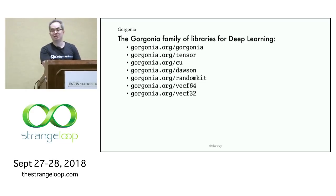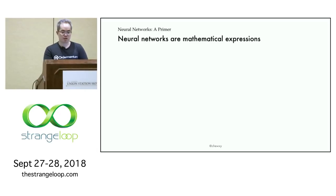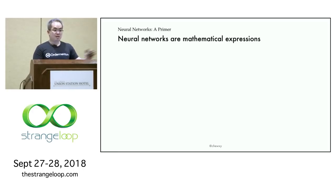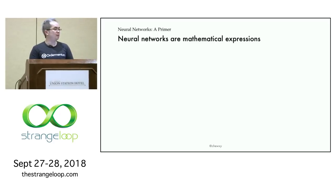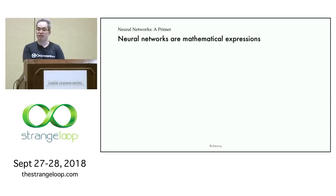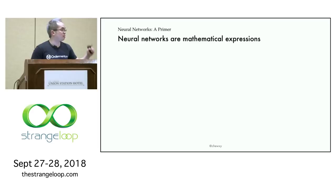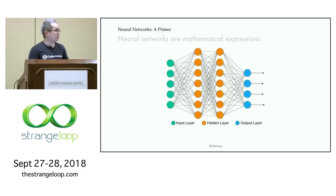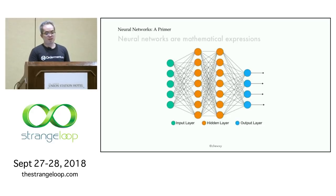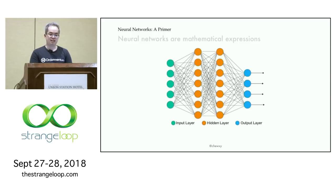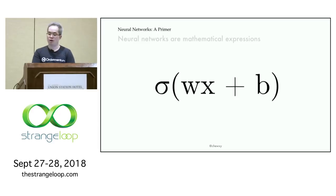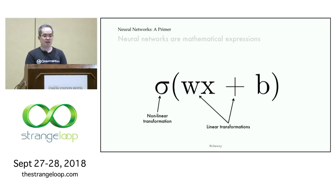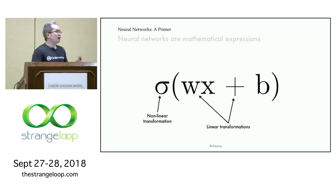How Gorgonia works is very similar to how TensorFlow and PyTorch work. Basically, you start by creating an expression graph. If you've used TensorFlow or Keras, it may escape your attention that what you're actually doing is building an expression graph. An expression graph is a representation of a mathematical expression, and I put it to you right now that all neural networks are mathematical expressions.